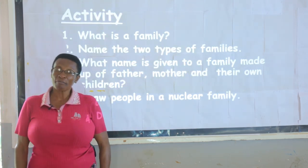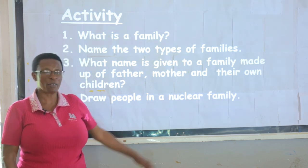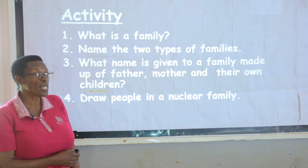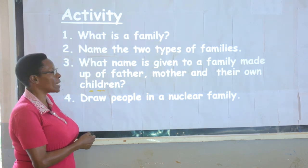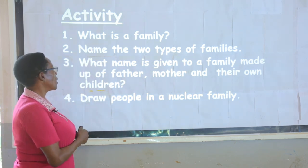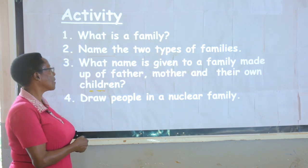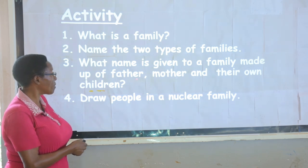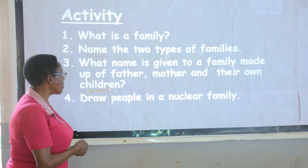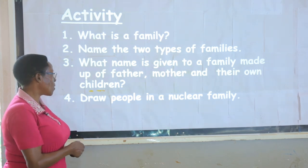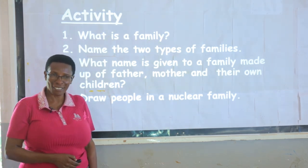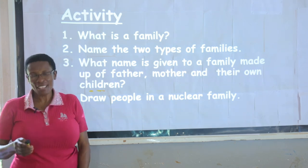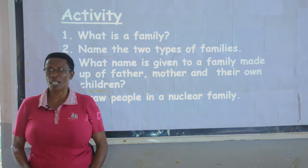Now, questions — this activity is very simple, about what we have talked about. What is a family? Make sure you answer the way I taught. Name the two types of families with the correct spellings. What name is given to a family of father, mother, and their own children? Draw people in a nuclear family — I know you like drawing. Draw very good pictures. Thank you very much. I expect very good work. Stay well.